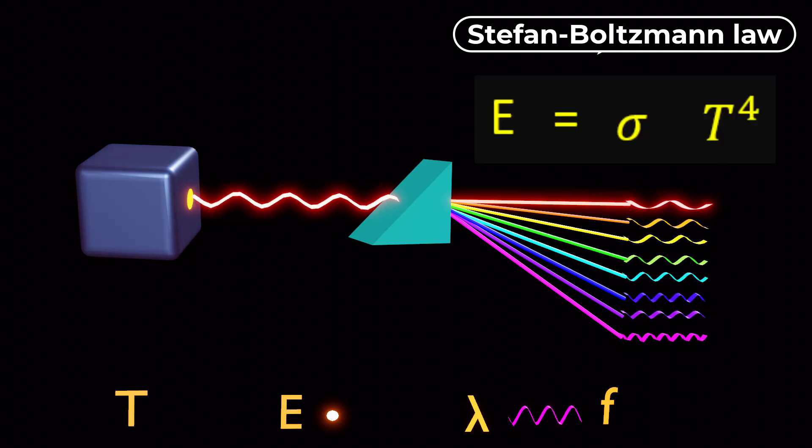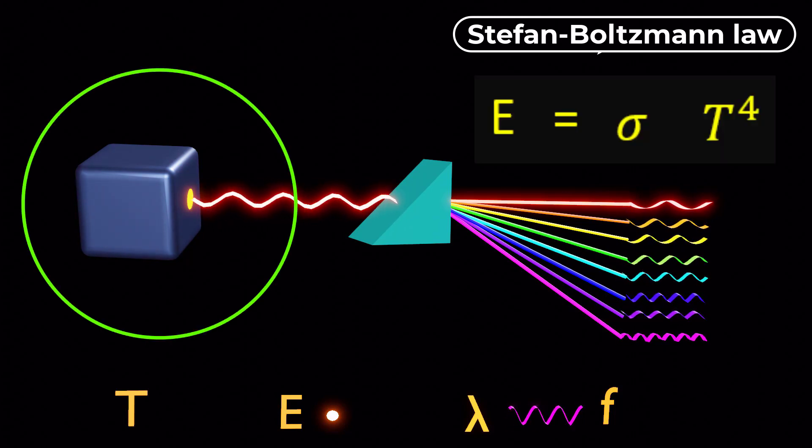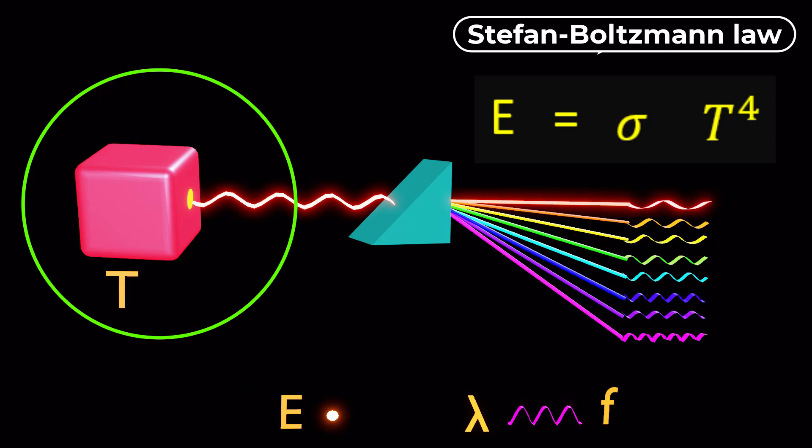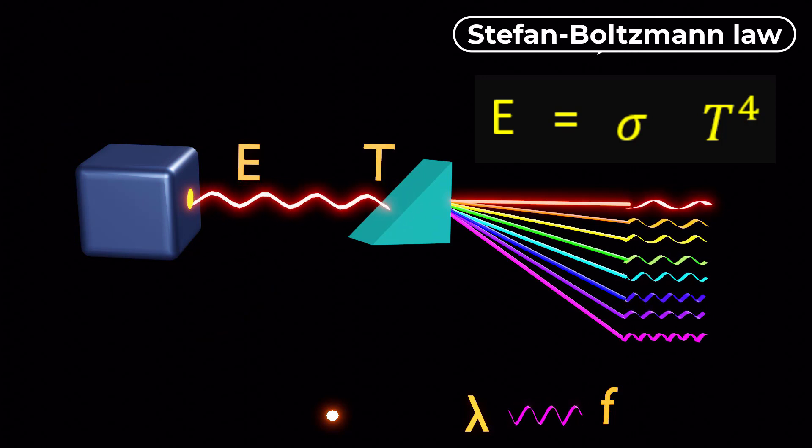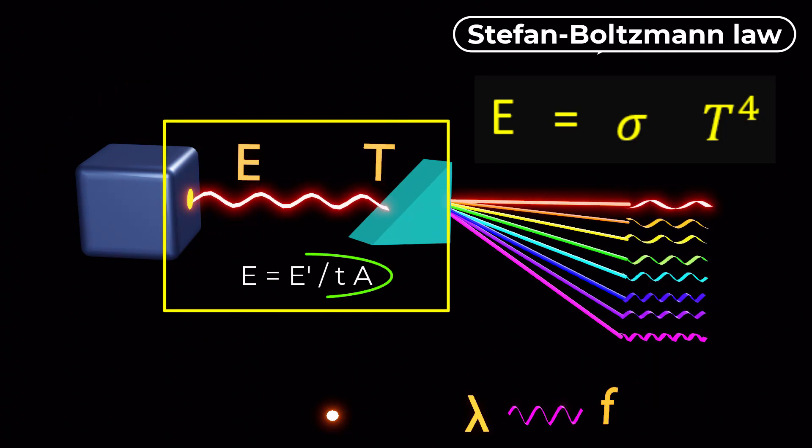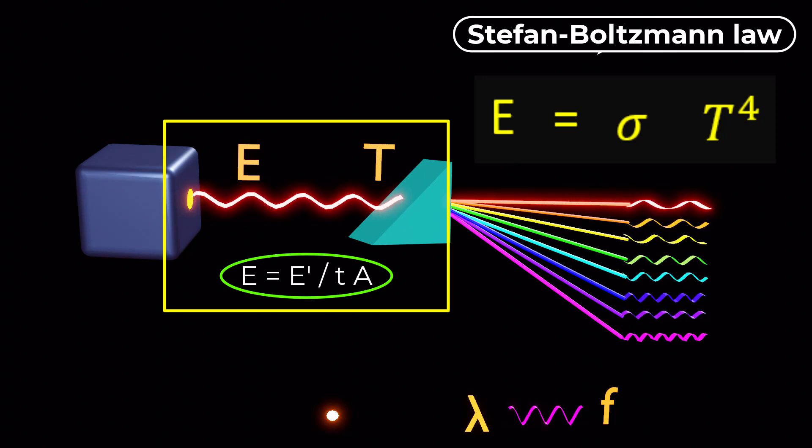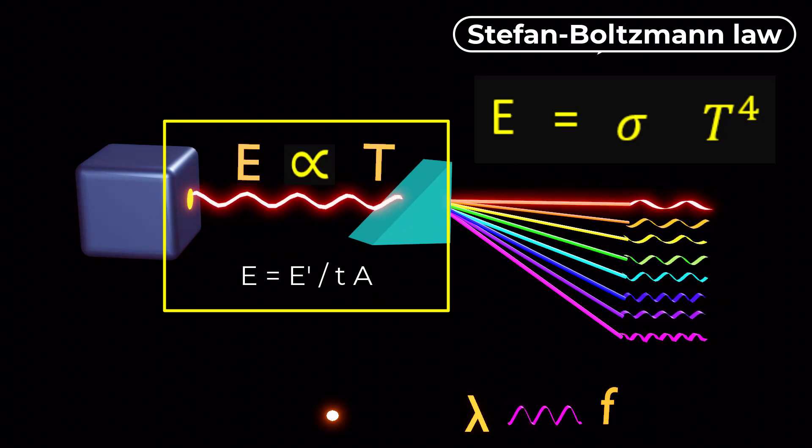The Stefan-Boltzmann law establishes a relationship between the temperature of the black body and the total energy radiated per unit surface area. This law states that total energy radiated per unit time per unit surface area of a black body is directly proportional to the fourth power of its absolute temperature.